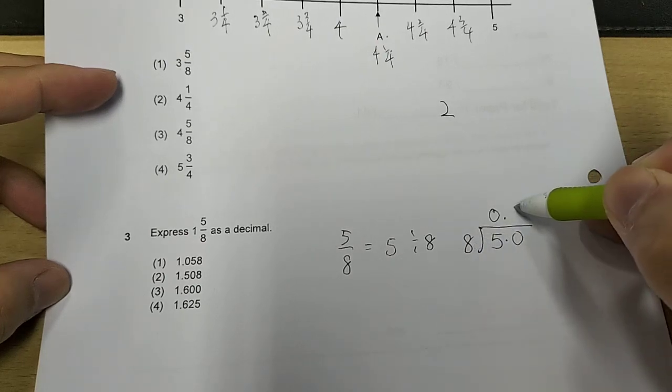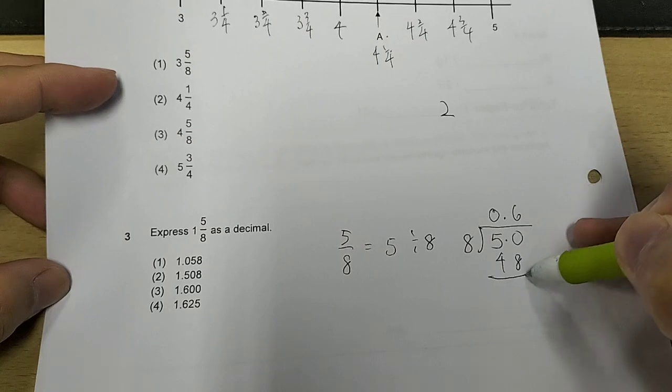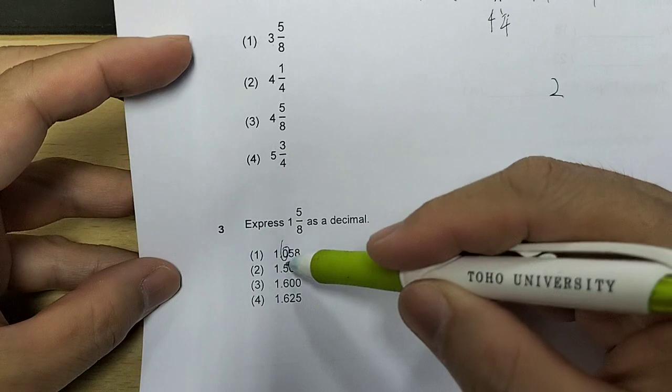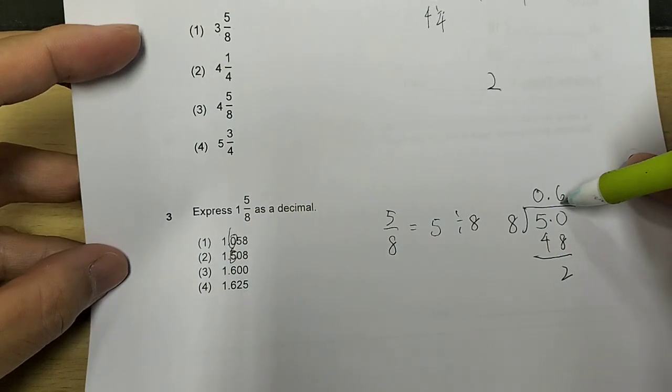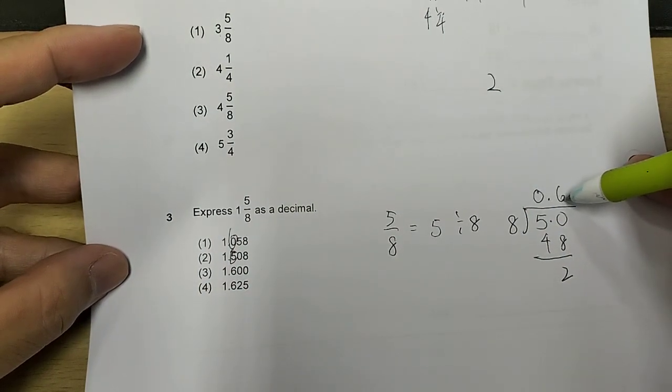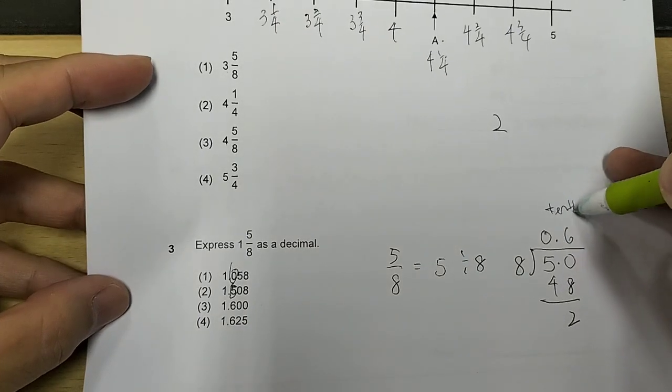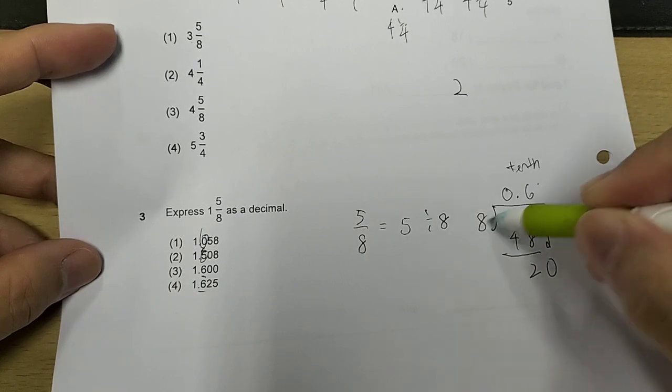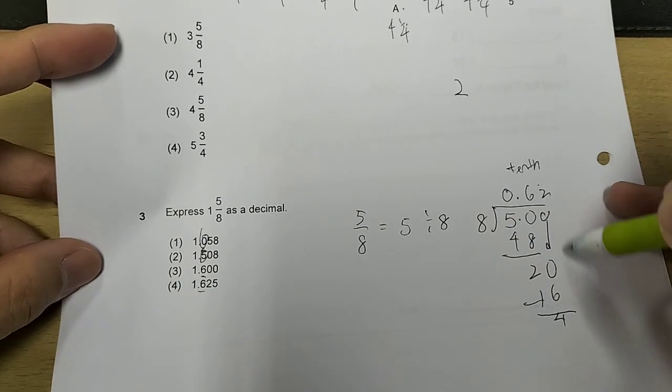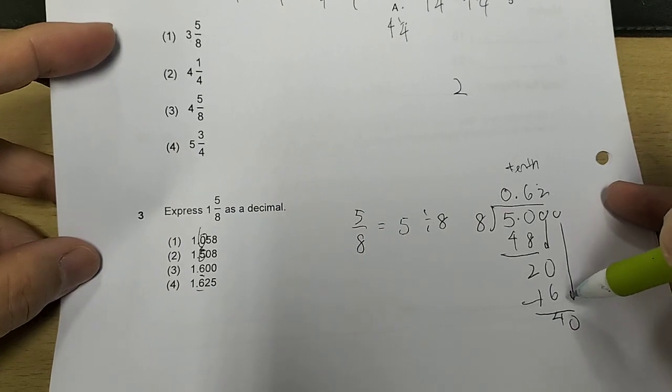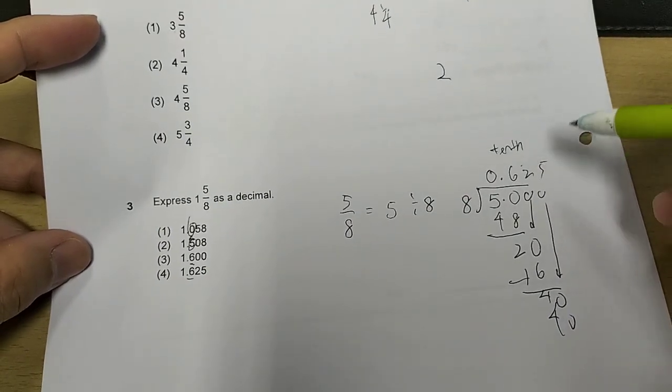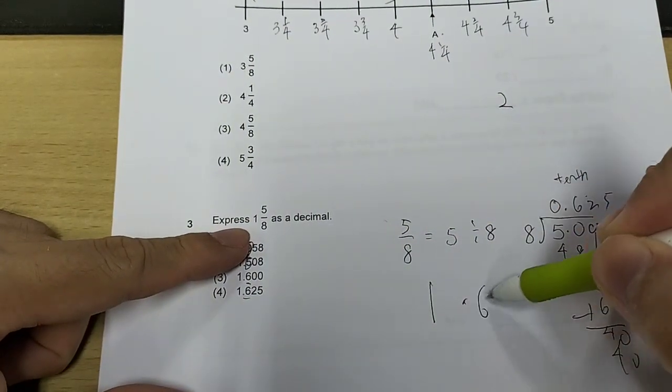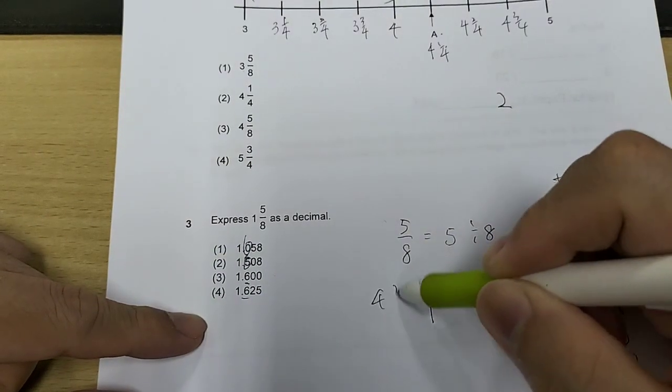8 times 6 is 48. Already I'm down to, this is out because this is 0, this is 5 because the first digit in the tenth place, tenth place is 6. So 16 times 5, 40. So my expressing this as a mixed number would be 1 whole, 0.625. So the answer will be number 4.